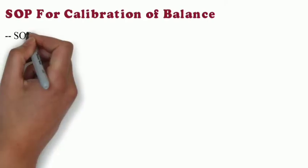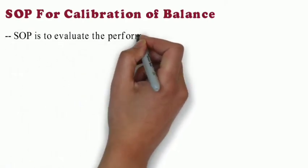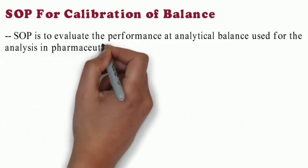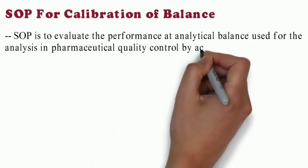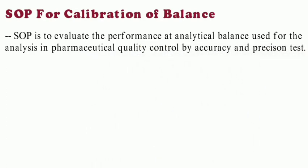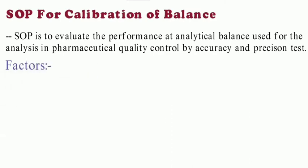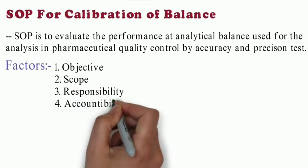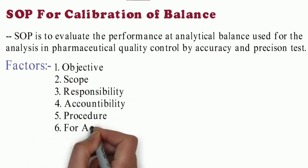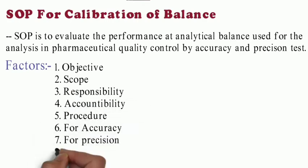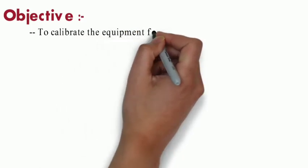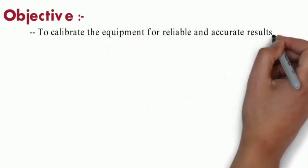SOP to evaluate the performance of analytical balance used for analysis in pharmaceutical quality control by accuracy and precision test. There are factors we will see in SOP like objective, scope, responsibility, accountability, procedure for accuracy, precision, and frequency. In objective, to calibrate the equipment for reliable and accurate results.